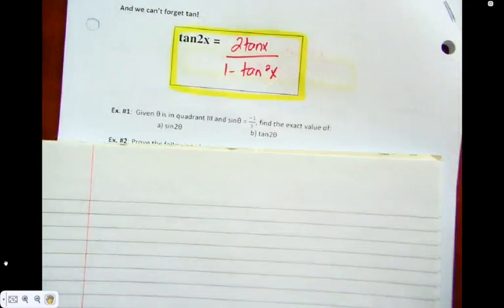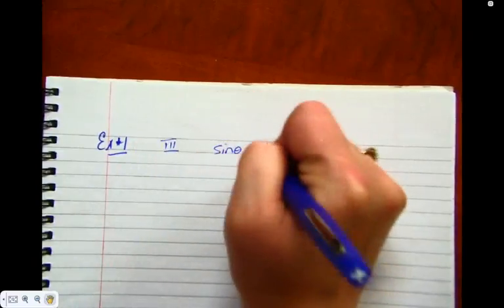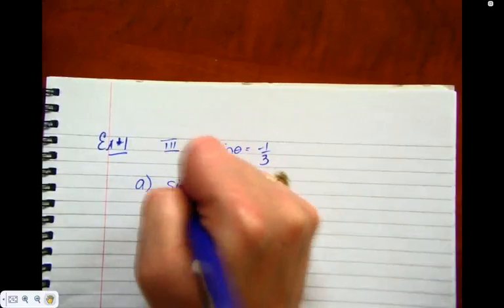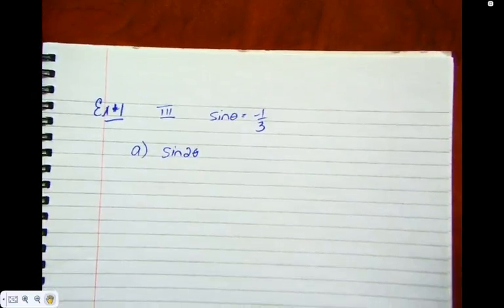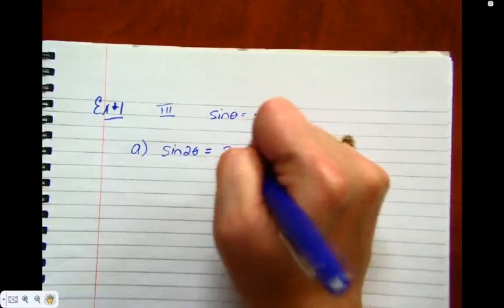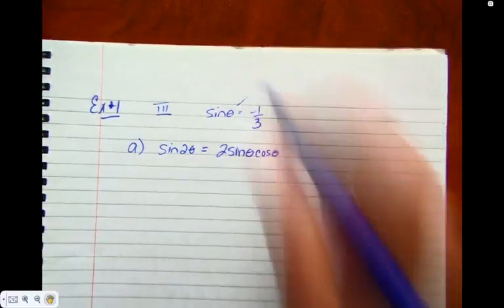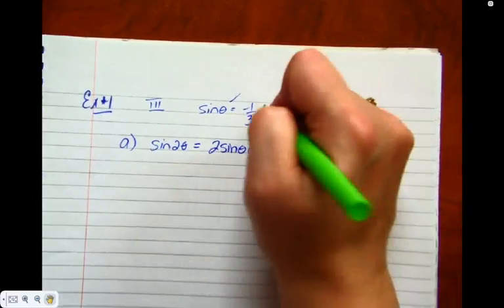Let's do some examples. Example number one: the angle is in quadrant three, and we're given that sine theta is negative 1 third. They want sine 2 theta and tan 2 theta. The only formula we have for sine 2 theta is 2 sine theta cos theta. I have sine theta; what I'm missing is cos theta. Using what we did in the first unit, I know this is opposite over hypotenuse, so I need the adjacent side.